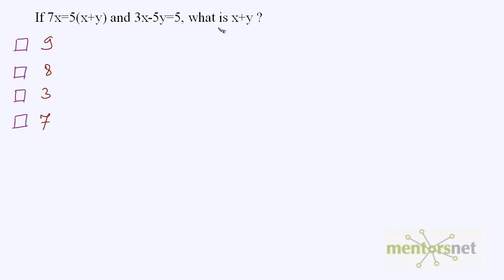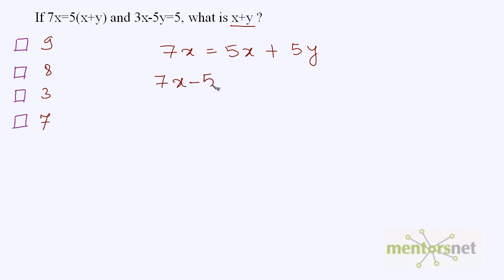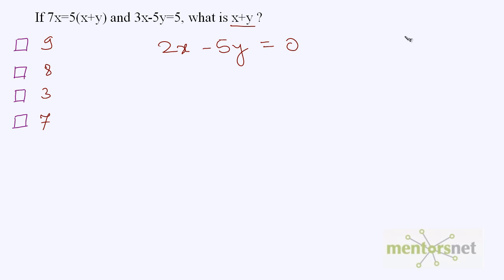Let us move on to the third question. You have to find out x plus y if these two equations are given. Let us rearrange them. Equation 1: 7x is equal to 5 times (x plus y), which expands to 5x plus 5y. Moving everything to the left: 7x minus 5x minus 5y is equal to 0, giving 2x minus 5y is equal to 0. This is equation 1. The other equation is 3x minus 5y is equal to 5, and this is equation 2.